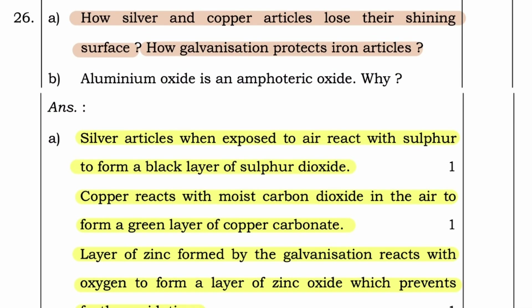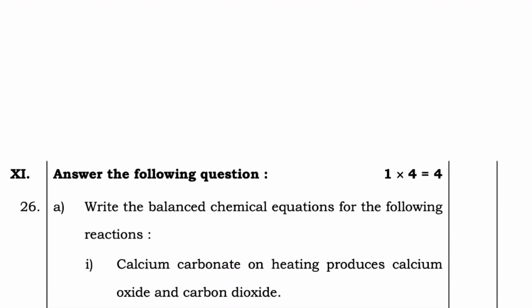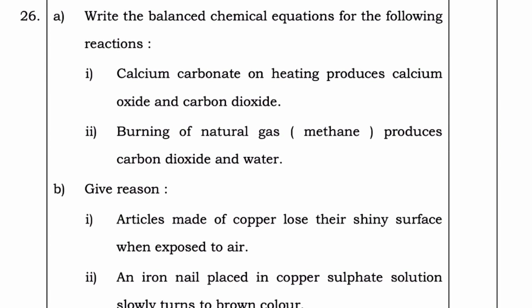Answer: Silver articles when exposed to air react with sulfur to form a black layer of silver sulfide. Copper reacts with moist carbon dioxide in the air to form a green layer of copper carbonate. The layer of zinc formed by galvanization reacts with oxygen to form a layer of zinc oxide which prevents further oxidation. Question B: Aluminium oxide is an amphoteric oxide — why? Aluminium oxide reacts with both acid and base to form salt and water; this is the reason why it is an amphoteric oxide.